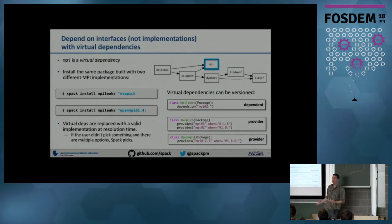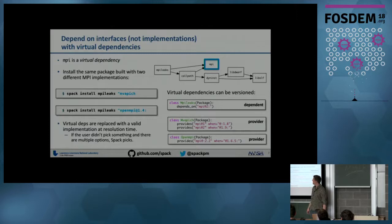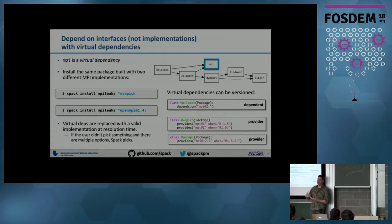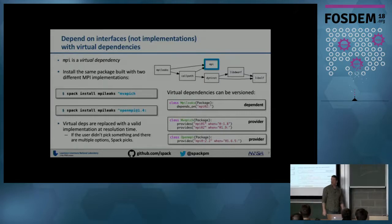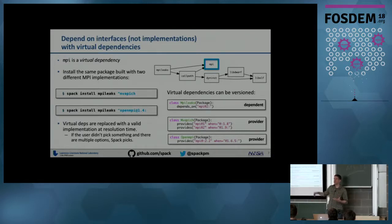The other thing in SPAC that enables swapping is virtual dependencies. The idea is that you depend on an interface — something like MPI, or JPEG where there's libjpeg and libjpeg-turbo. In a lot of package managers you can only depend on specific packages, but here one package can provide MPI and provide it at different versions. So mpich can say 'I provide MPI version 2 when I'm at 1.9 or higher,' and packages depend on MPI at a particular version. SPAC pairs them up, and you can also specify a specific provider on the command line.